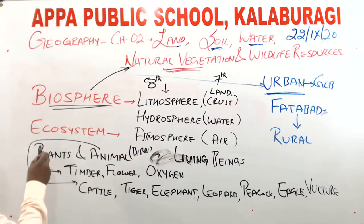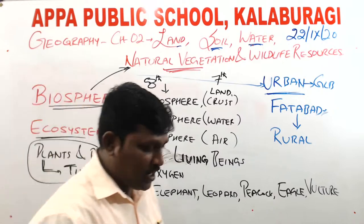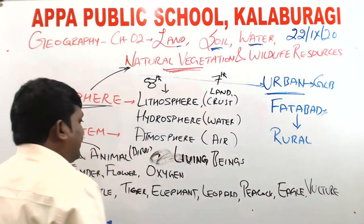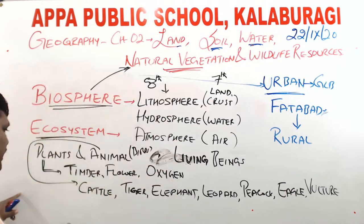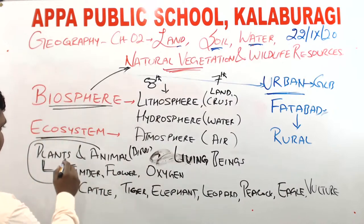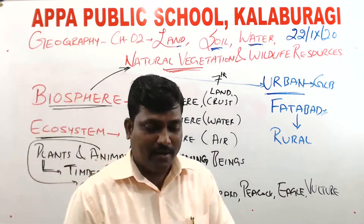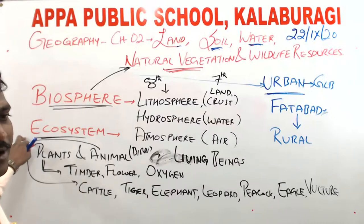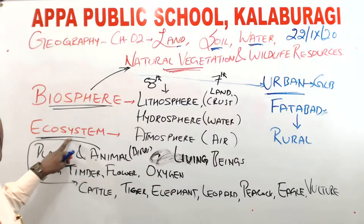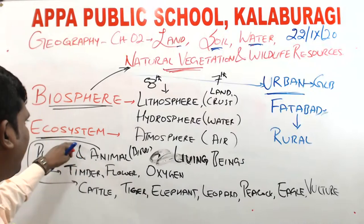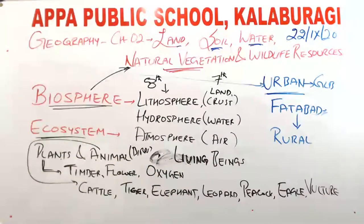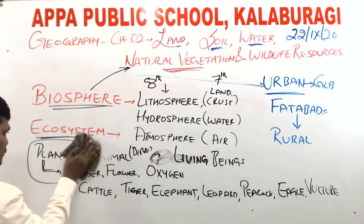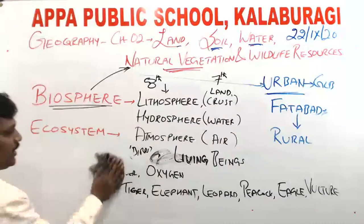Plants and animals are interdependent on each other for their survival. That system or process we call the ecosystem. Plants and animals are interdependent on each other for their survival, and this process of survival is called the ecosystem.